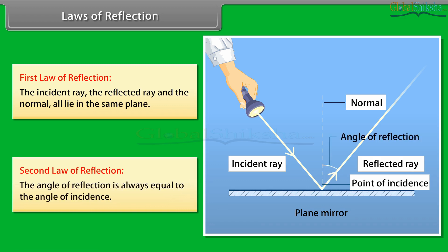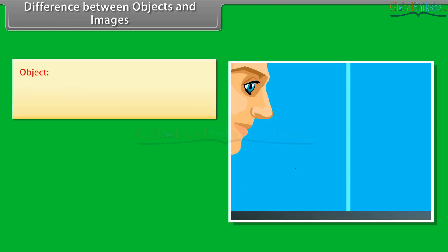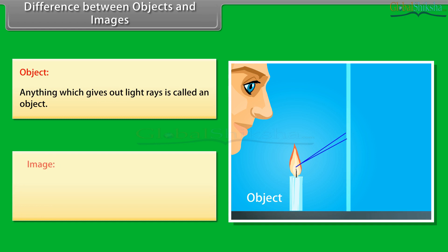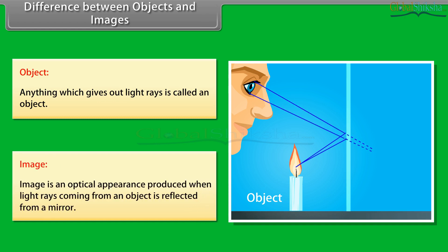Difference between objects and images. Object: Anything which gives out light rays is called an object. Image: Image is an optical appearance produced when light rays coming from an object is reflected from a mirror.